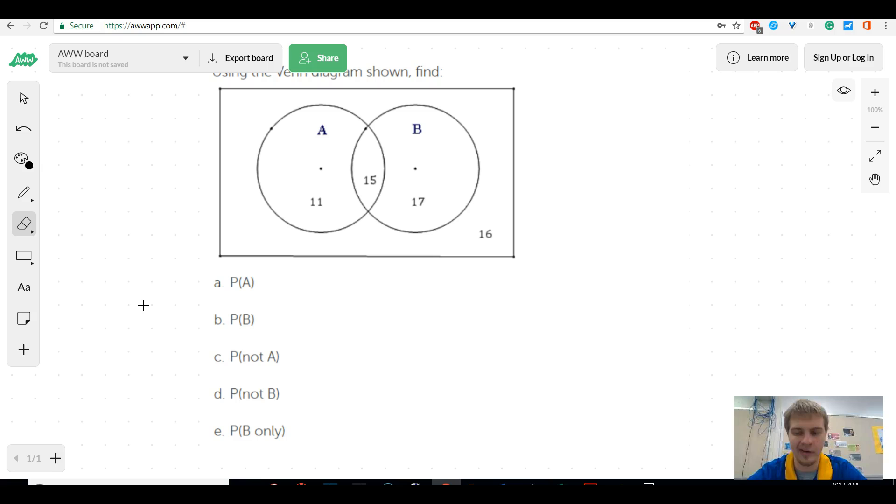Because we don't want to write out every single time the probability of blah, blah, blah, blah, blah, because that takes forever. The shorthand is you use P for probability, and then you just put what you're looking for in there. So we want the probability that this thing is A. Which, if you look at all the people that are A, that would be, a lot of people just say 11. But that's not true, because these people are also in A. They're in B, too, but they're also in A. So the probability that you're in A would be 26.